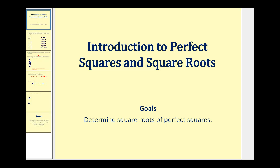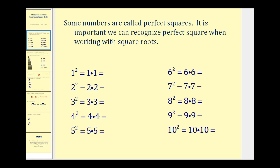Welcome to an introduction to perfect squares and square roots. In order to better understand square roots, we need to spend a little bit of time talking about special numbers called perfect squares. Perfect squares are the numbers that we obtain when we square an integer. Here we see the integers from one through ten, and if we square them we get perfect squares.